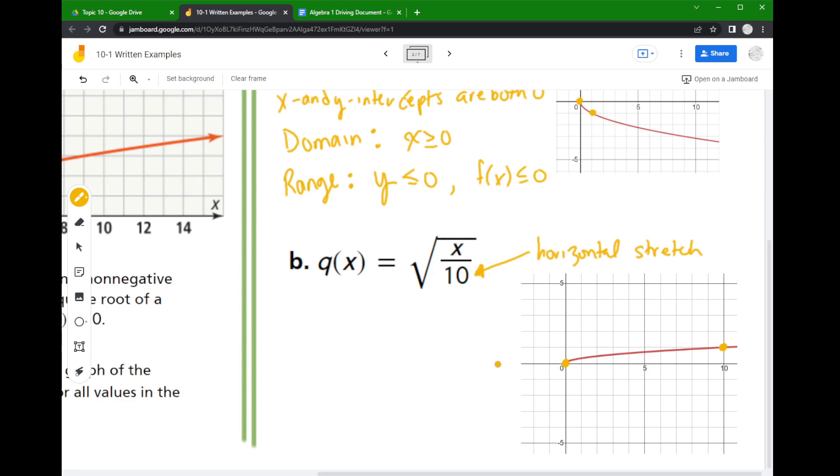Notice this graph still has an x and y intercept at 0. That didn't change. The only thing that really changes that intercept is when you slide the graph around, so if you do translations.